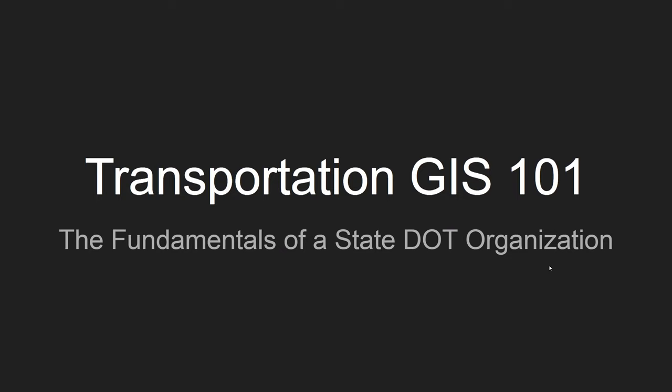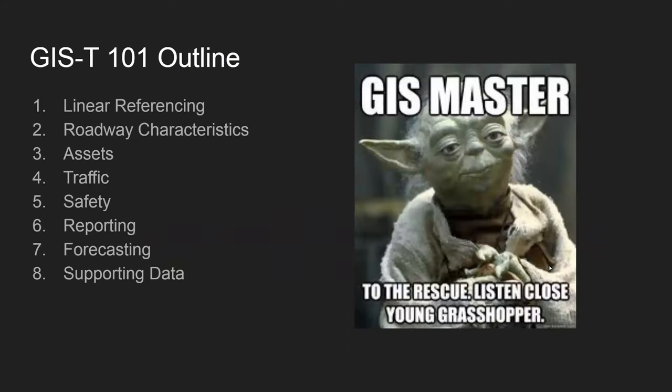Hi everyone, we'll get started. We're going to be talking about some of the basic fundamental parts of what a transportation state DOT organization does with GIS. Some of the key areas of focus that a state-level DOT has pertain to these eight bullet items. It's not the limit of what we do, but it covers the most predominant aspects of what a state DOT GIS group does.